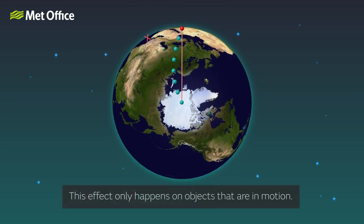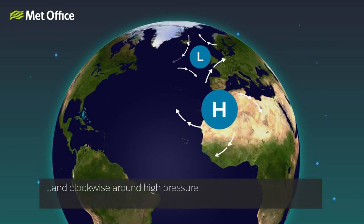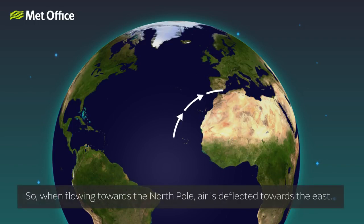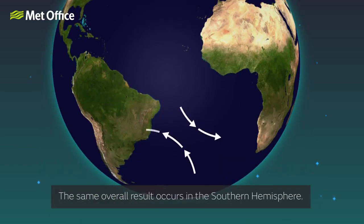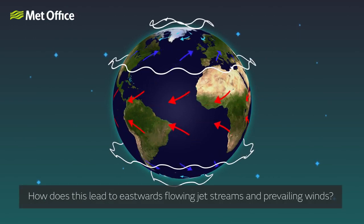This effect only happens on objects that are in motion. This deflection is a major factor in explaining why winds blow anti-clockwise around low pressure and clockwise around high pressure in the Northern Hemisphere, and vice versa in the Southern Hemisphere. So when flowing towards the North Pole, air is deflected towards the east, and when travelling southwards back towards the equator, it is deflected westwards. The same overall result occurs in the Southern Hemisphere.